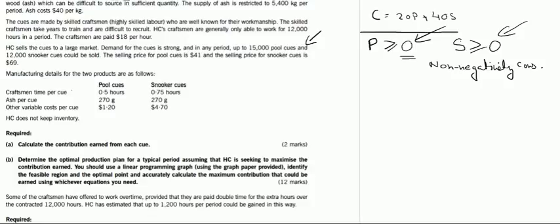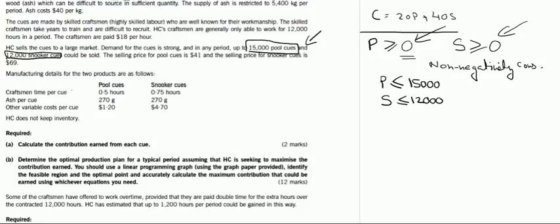It says HHC sells the cues to a large market and demand for the cues is strong. In any period, up to 15,000 pool cues and 12,000 snooker cues could be sold. This means you cannot sell more than 15,000 pool cues, but you can sell less. Likewise, you cannot sell more than 12,000 snooker cues, but you can sell less if you want.